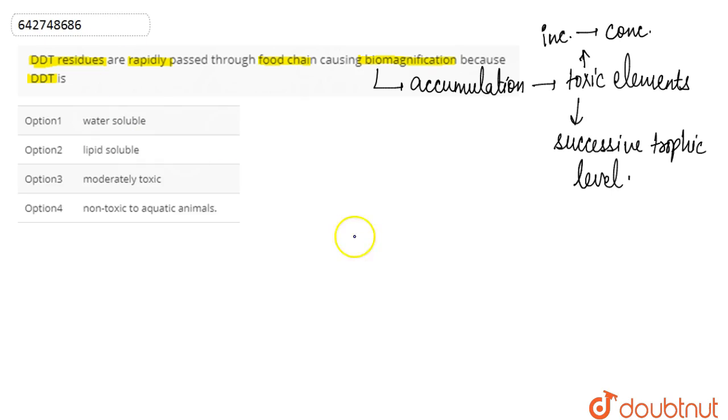Basically, DDT is a chlorine-containing pesticide which is used in agriculture. It rapidly passes through the food chain causing biomagnification.